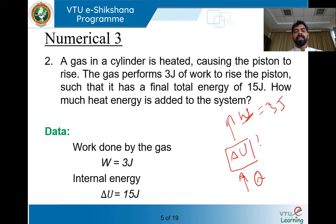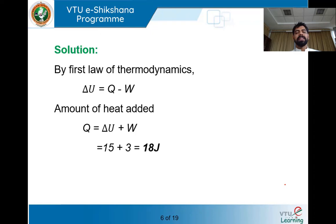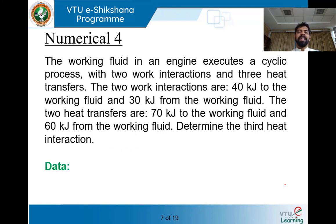We are adding some Q amount of heat, and this system is delivering W amount of work. Some energy is stored within the system as internal energy. By the first law, delta U equals Q minus W, so Q equals delta U plus W, which is 15 plus 3 equals 18 joules. Out of 18 joules added, 3 joules of work is done and 15 joules is the change in internal energy.